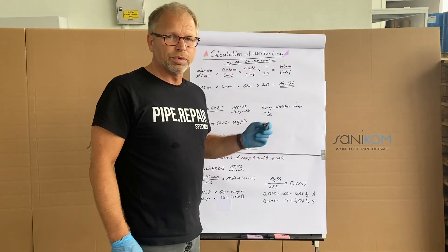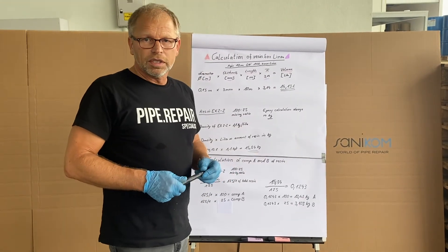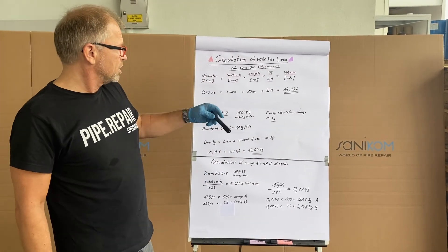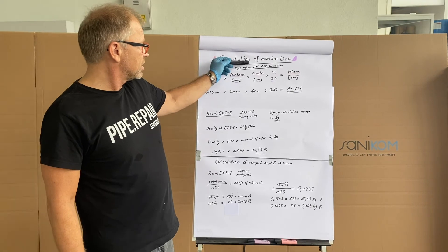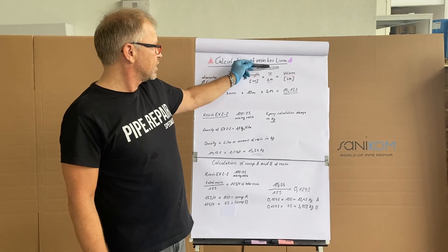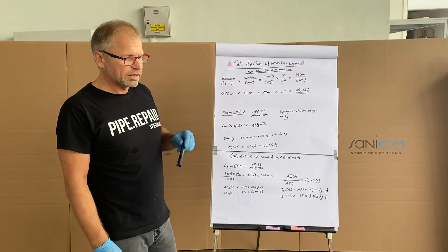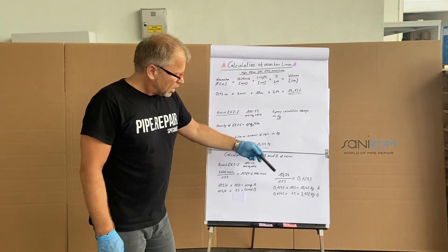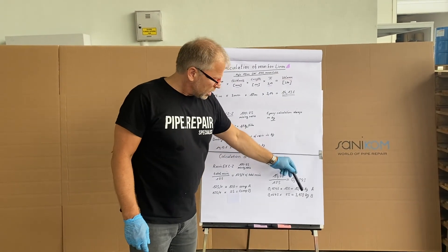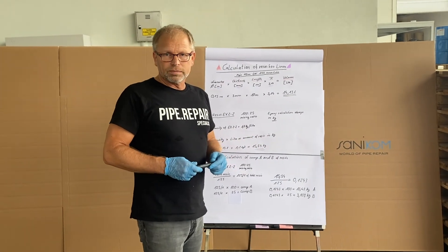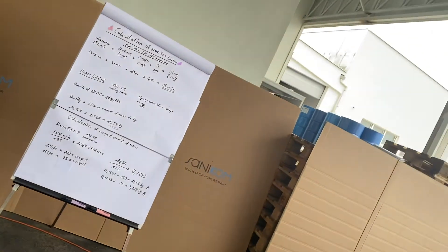That's component B. Now we know exactly for diameter 150, 3 millimeter thickness, 10 meter length how much component A and component B we have to use.